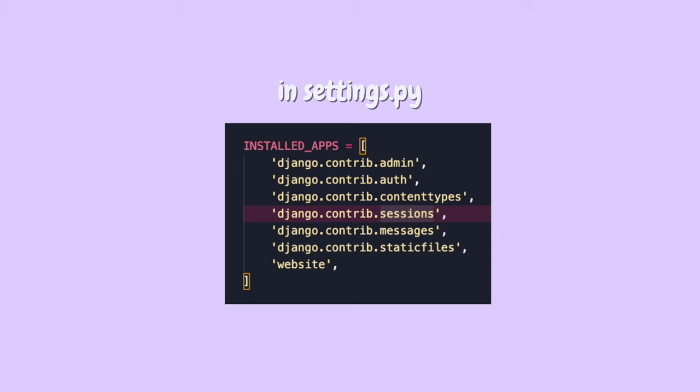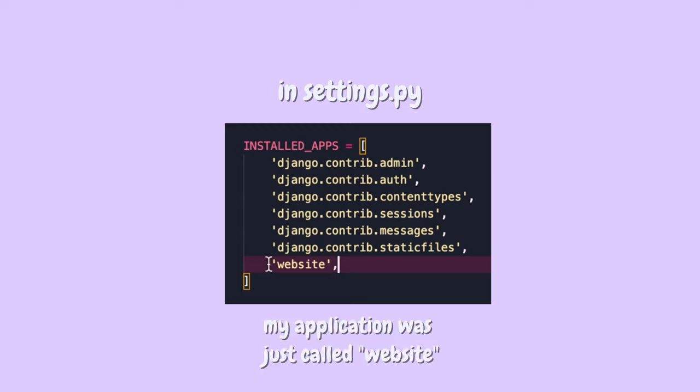First, go to the file called settings.py and scroll to the installed apps section, then add your application name to that section. This just lets your Django project be aware that your Django application exists.